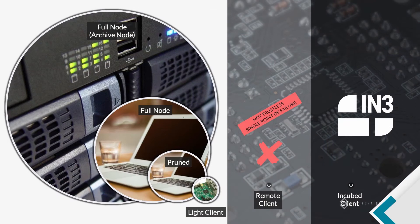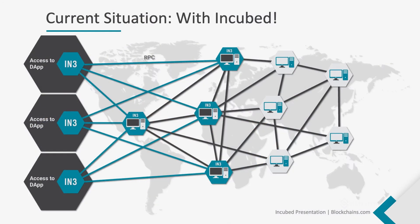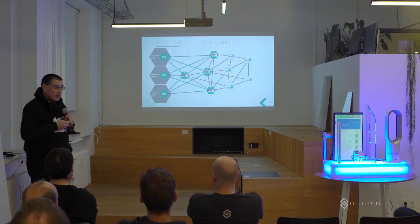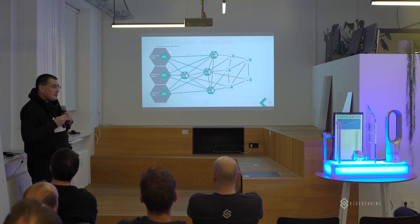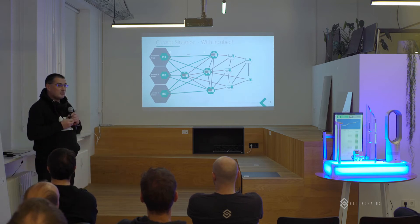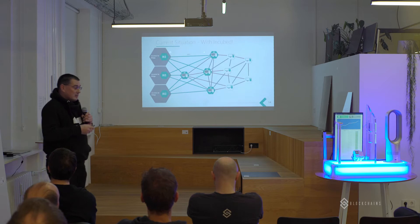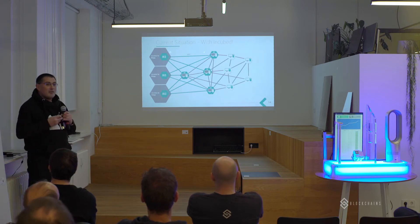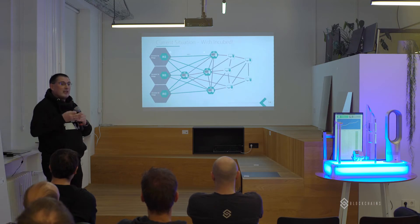With Incubed, we try to connect the abilities of the light client — that it can validate all the information by itself — with the good things of a remote client, that it doesn't need to synchronize. With Incubed, we can now have a completely decentralized solution. We have several nodes in our design network, which are normal full nodes that also run the Incubed protocol, and are able to serve the Incubed network as nodes so that clients can connect to any of these Incubed nodes. In this way, we don't need a single centralized instance, and the Incubed client can validate everything by itself.